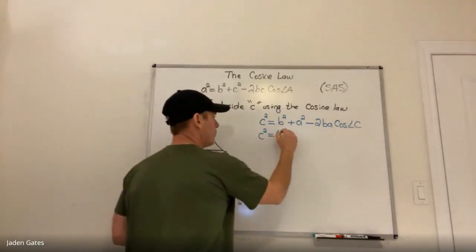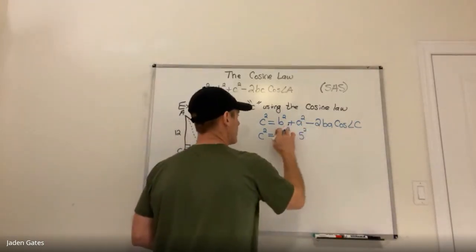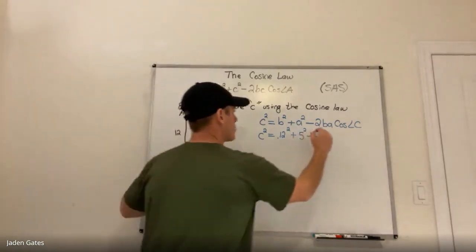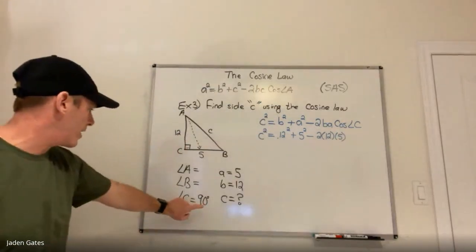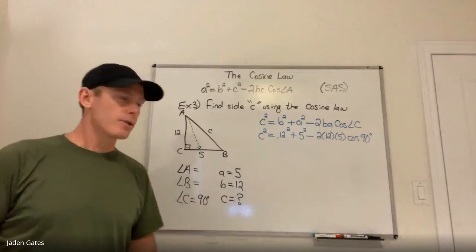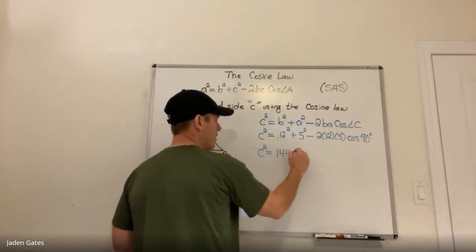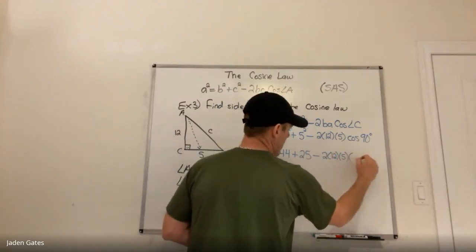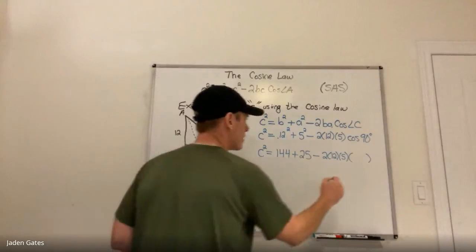Substituting in: b squared is 12, so 12 squared. A is 5, so 5 squared. Minus 2 times 12 times 5 times the cosine of angle C, which is cosine of 90 degrees. Following BEDMAS, 12 squared is 144, 5 squared is 25. When I put in cosine of 90 degrees, I actually get 0.